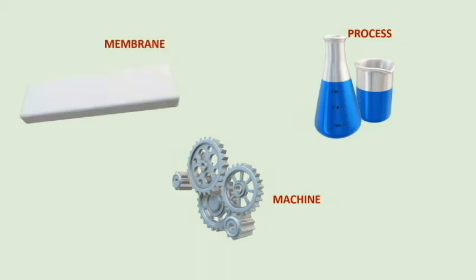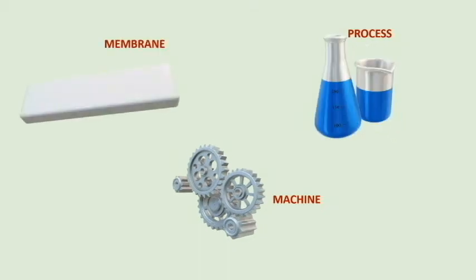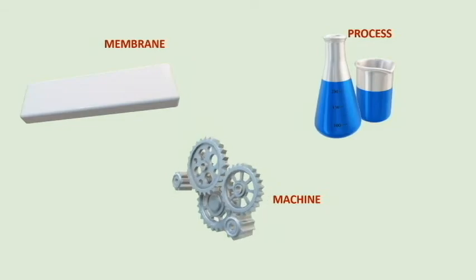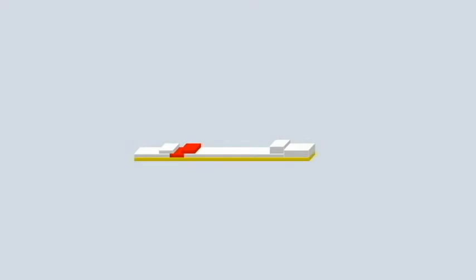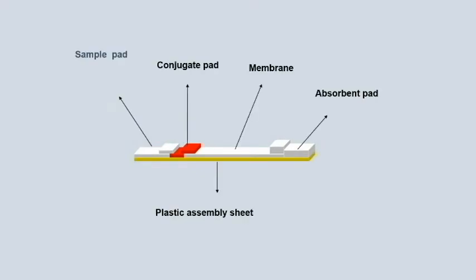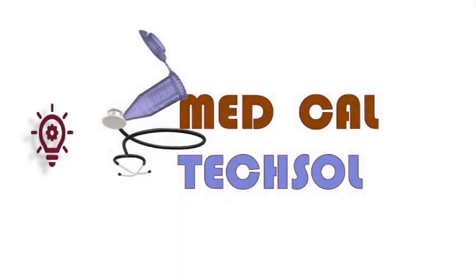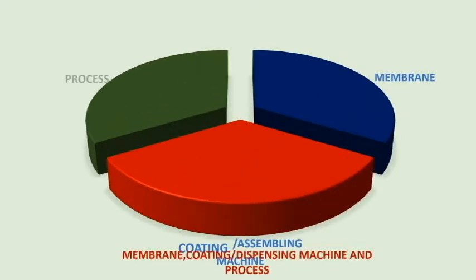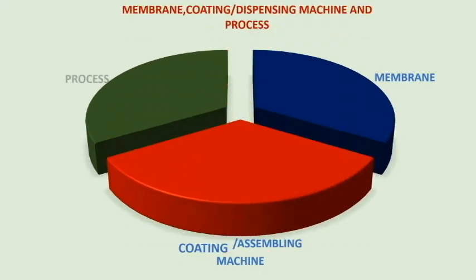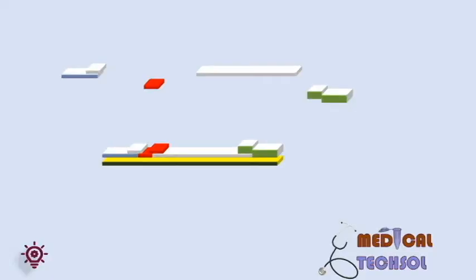Hi, I am going to tell you about lateral flow membrane machine used in the liquid dispensing and membrane dispensing or coating process. Stay tuned to know about all aspects of lateral flow membrane coating. Three important things associated with the membrane coating or dispensing are: first one is the membrane, second one is the machine, and third one is the process used in the membrane coating or dispensing.